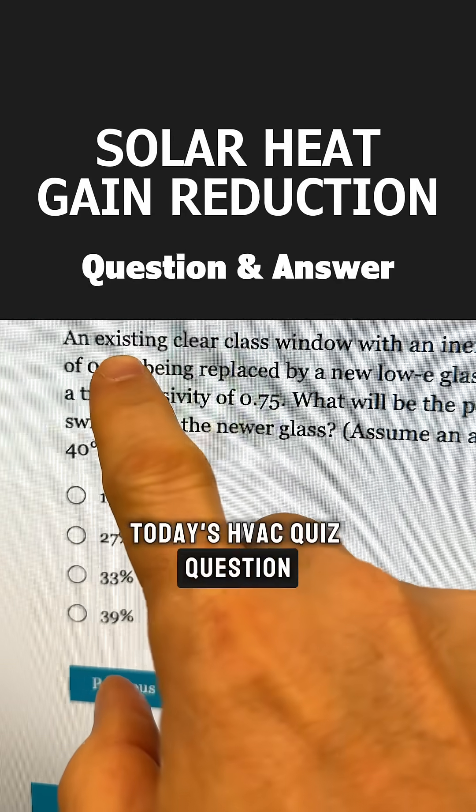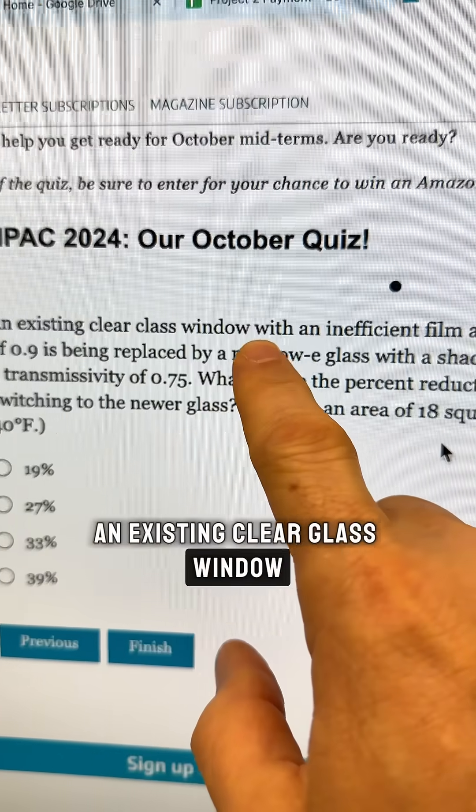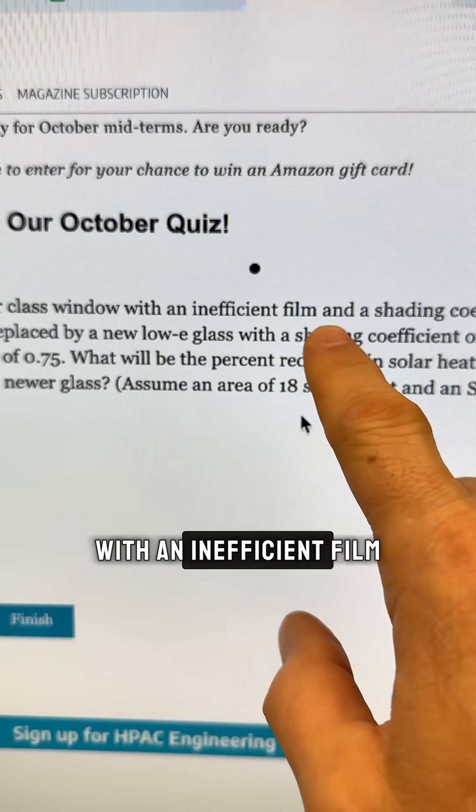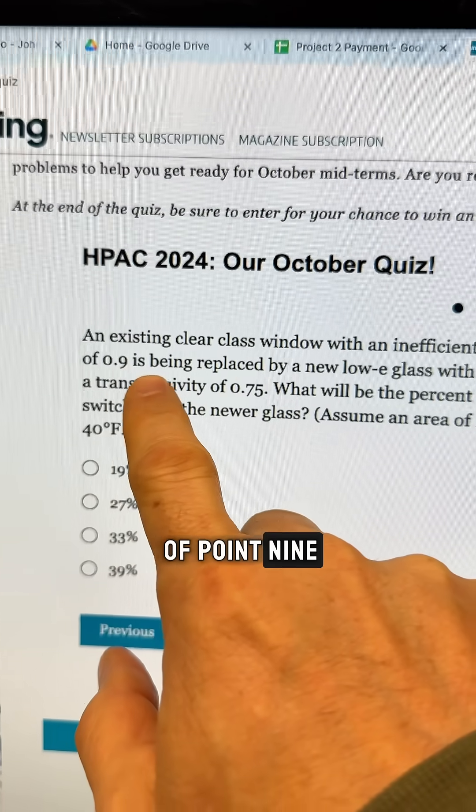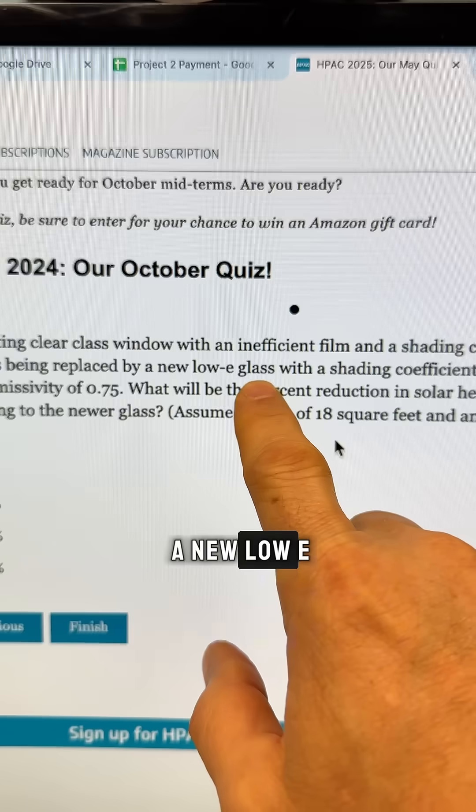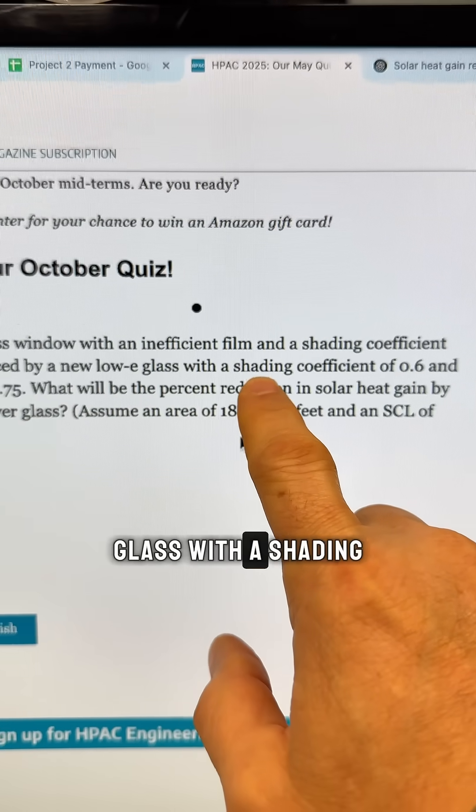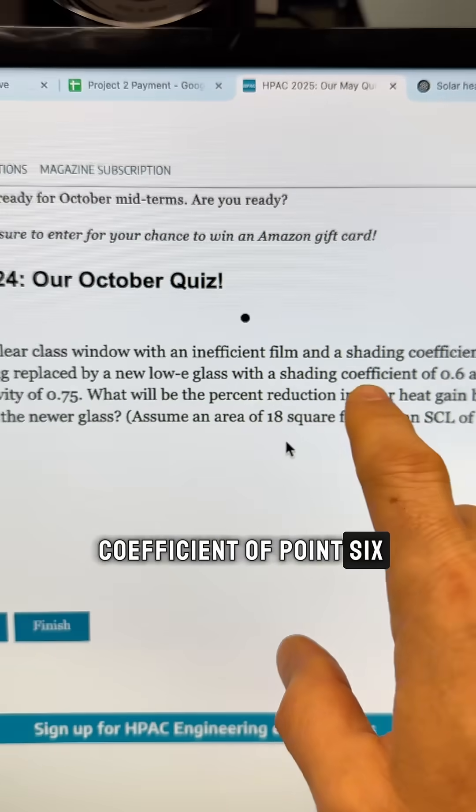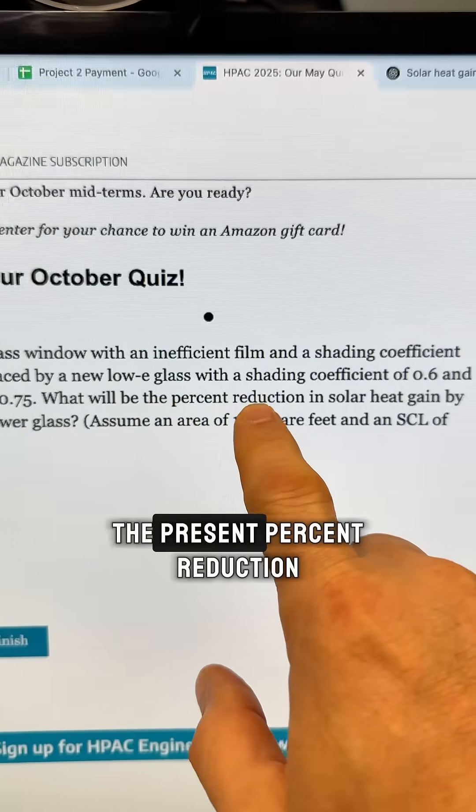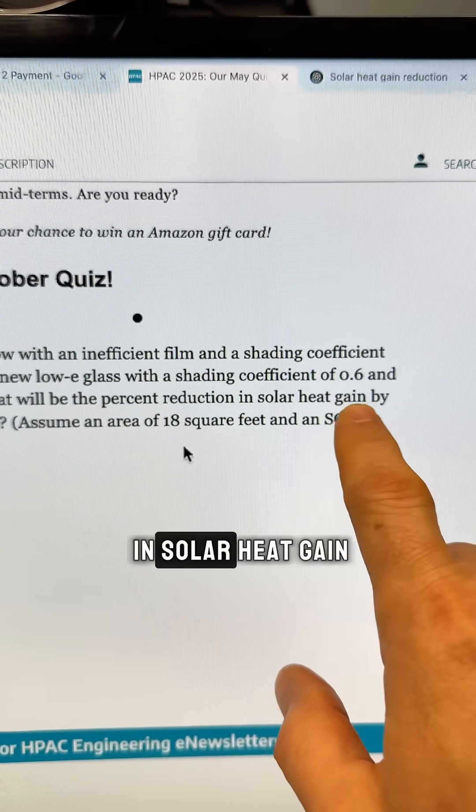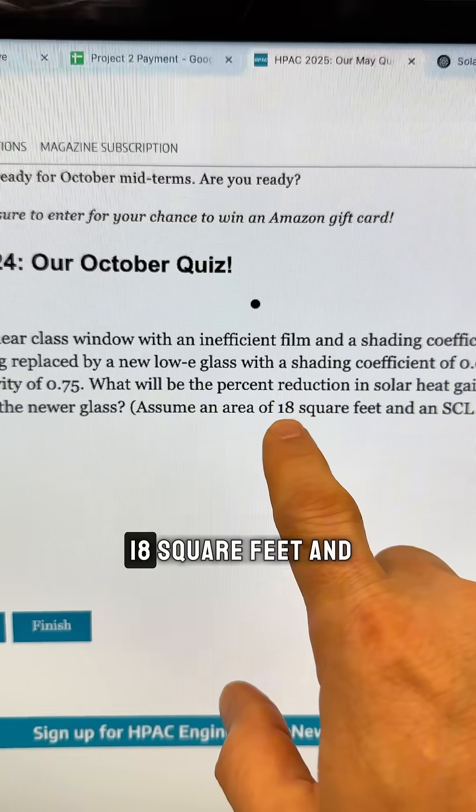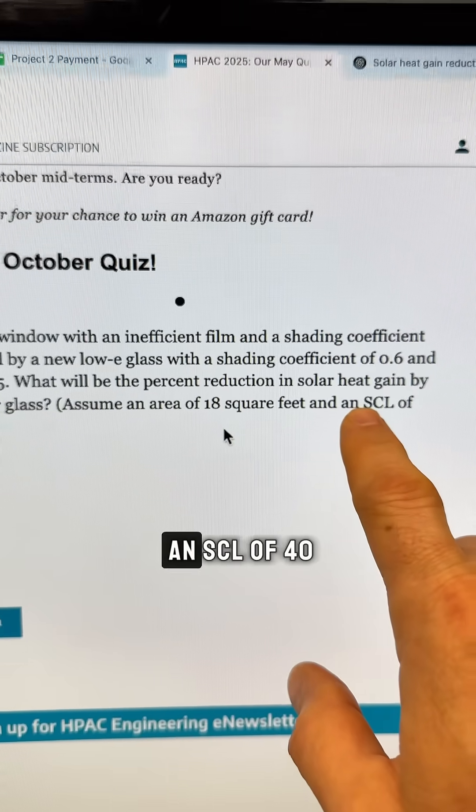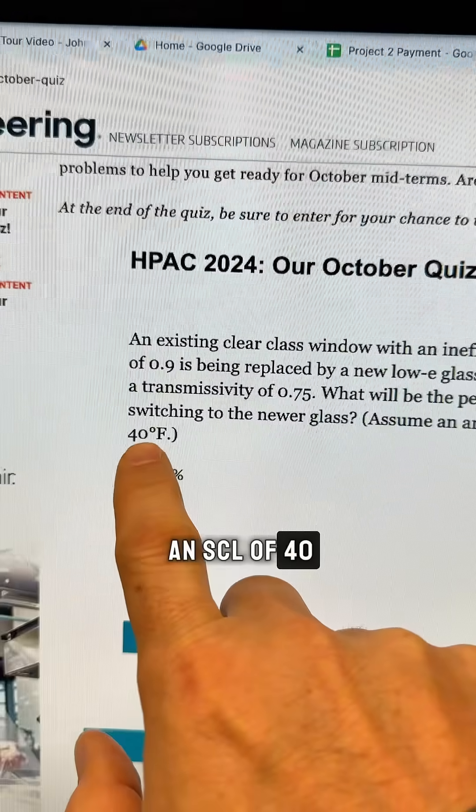Today's HVAC quiz question. An existing clear glass window with an inefficient film and a shading coefficient of 0.9 is being replaced by a new low-E glass with a shading coefficient of 0.6. What will be the percent reduction in solar heat gain by switching to the newer glass? Assume an area of 18 square feet and an SCL of 40.